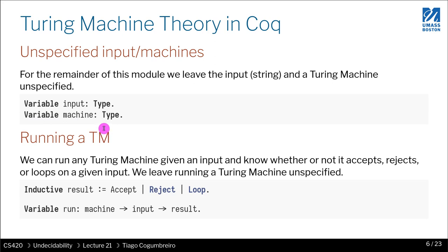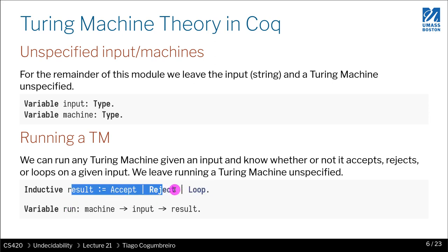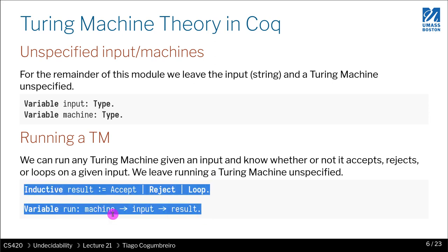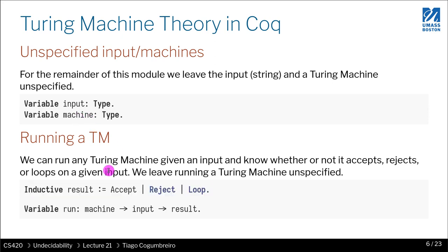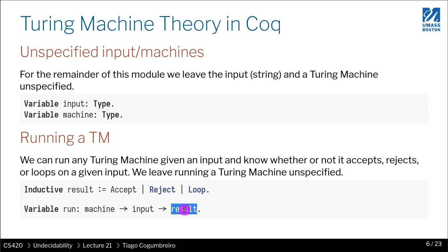Next, you will need to learn about the notion of running a Turing machine. Because we leave the notion of what a machine is unspecified, the function that runs a machine must also be unspecified. Running the machine means running it with a given input, and the idea is: if you run it, you are able to know whether the machine either accepted that given input, rejected that given input, or looped for that given input. The function 'run' specifies something that, given the machine and an input, gives you the result of running that Turing machine with that given input.